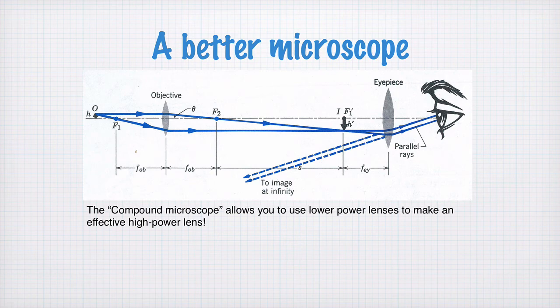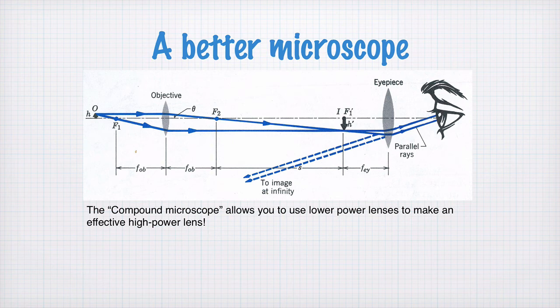This is the compound microscope, and it allows you in particular to use lower-power lenses to make an effective high-power lens. So your objective and eyepiece do not need to be crazy balls of glass — they can be things that are relatively easy to make and of very high optical quality.